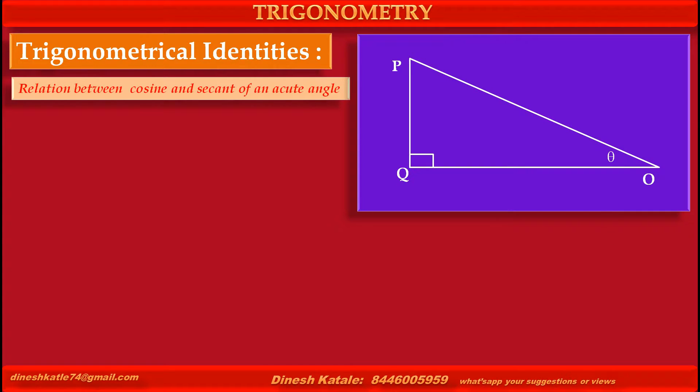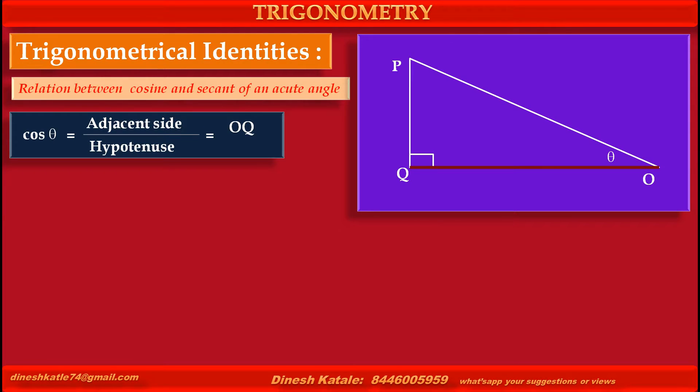Theta is an acute angle at point O. Cos theta equals adjacent side upon hypotenuse, which equals OQ (adjacent side of theta) upon OP (hypotenuse).